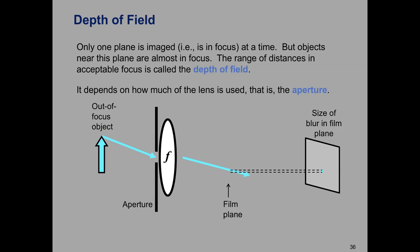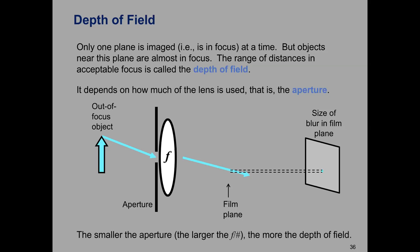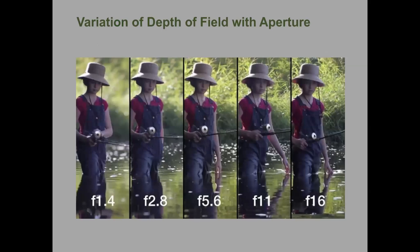Smaller apertures give a more acceptably focused image — it will be dimmer, but less out of focus. This is why, if you wear glasses or contacts and don't have them on, squinting might let you see more clearly. Even without glasses, looking through a very small aperture you can see things more clearly, though what you see will be dimmer. So larger F-number means bigger depth of field.